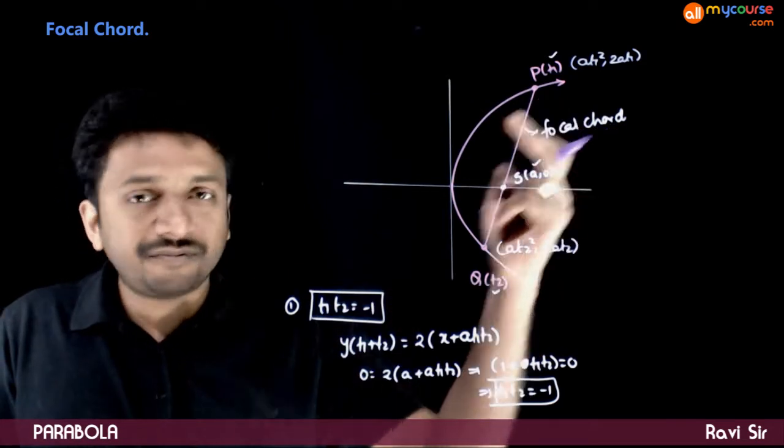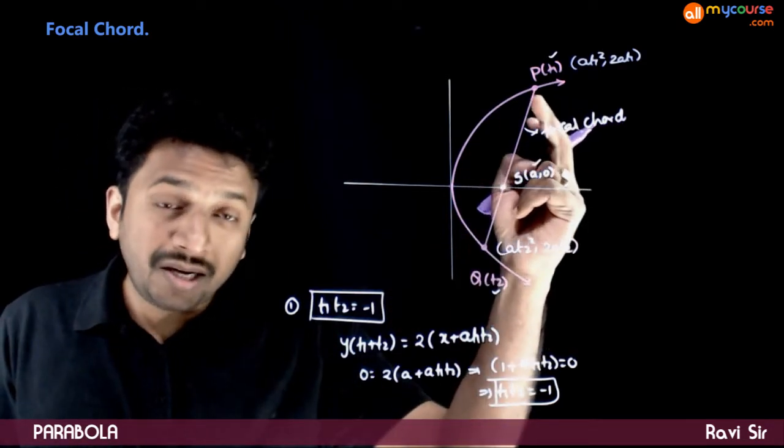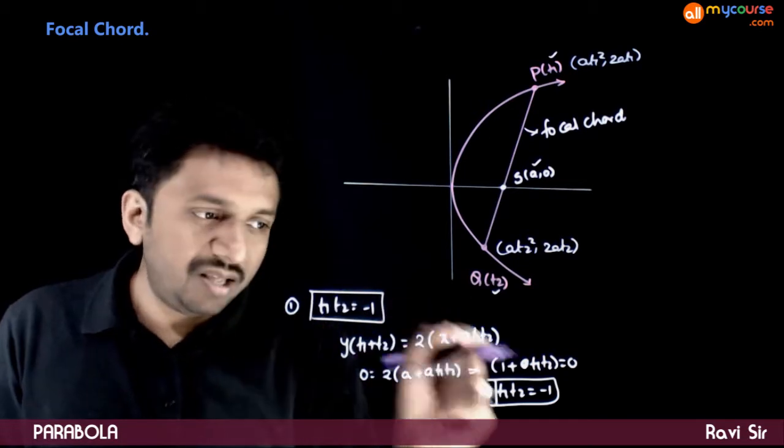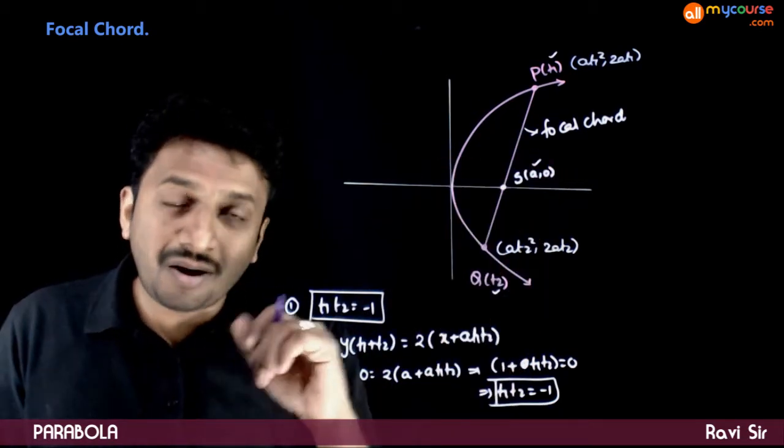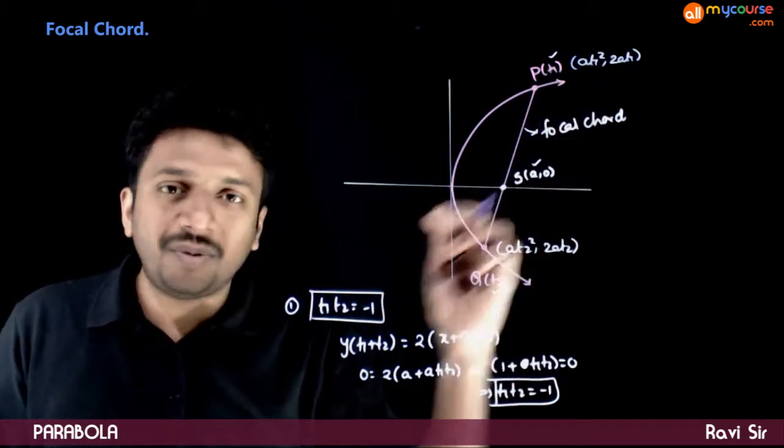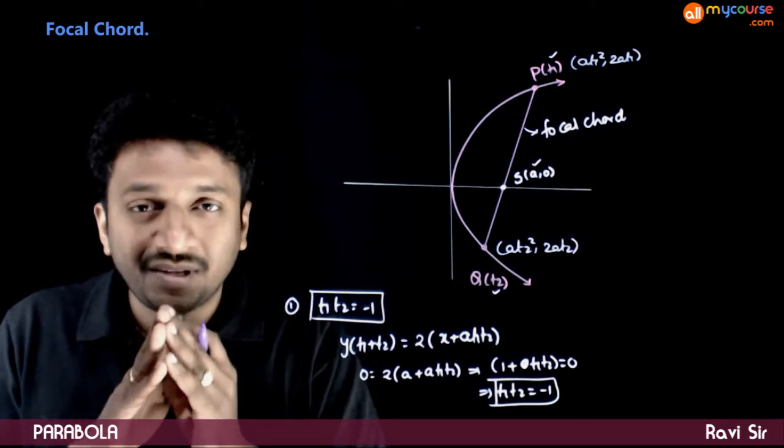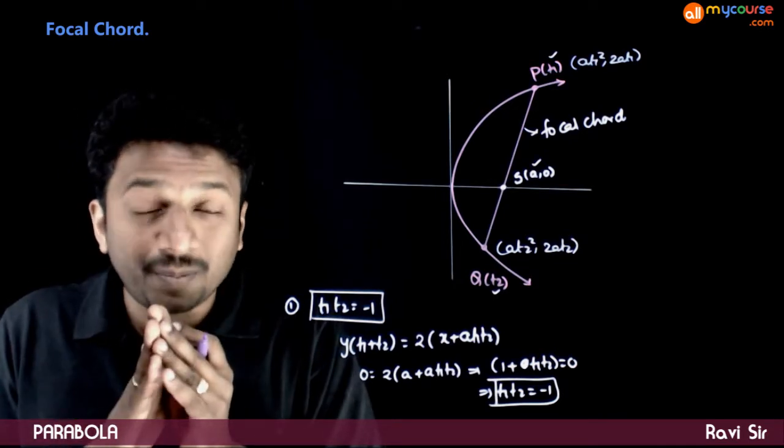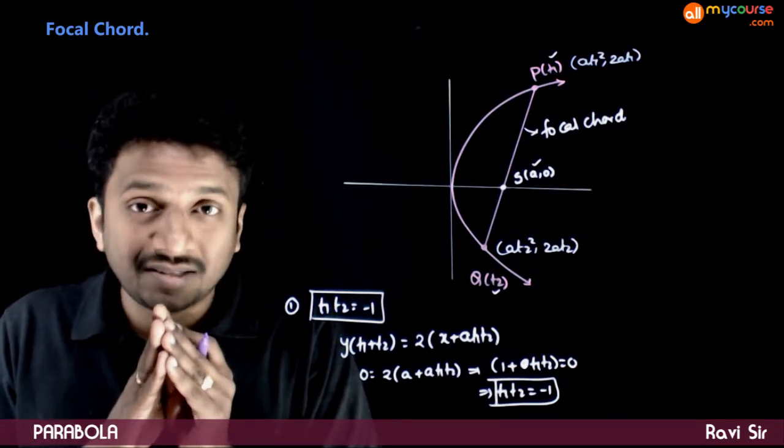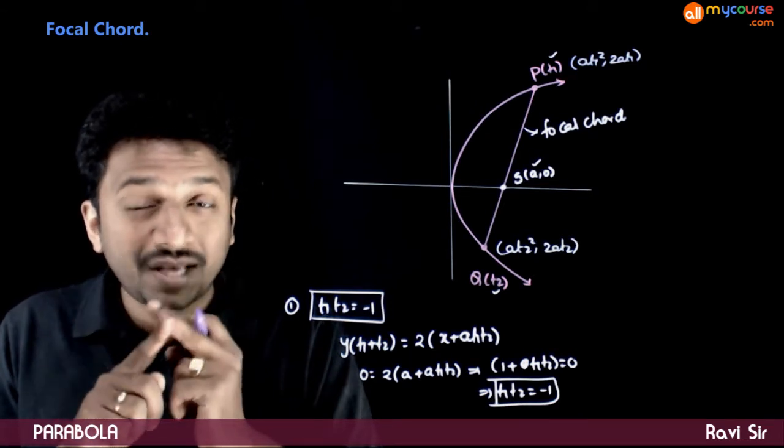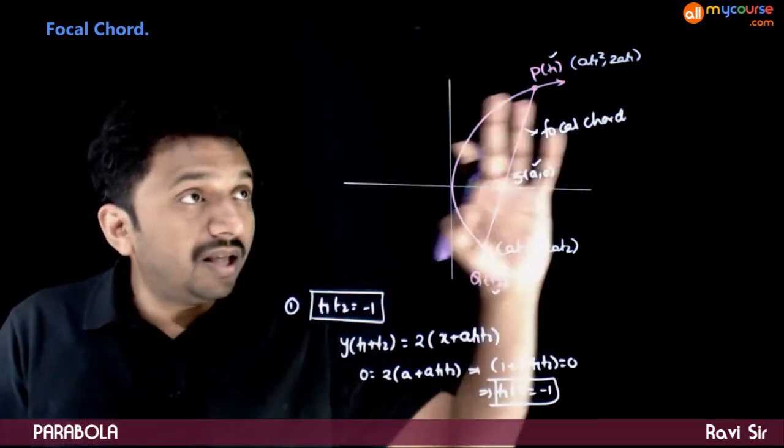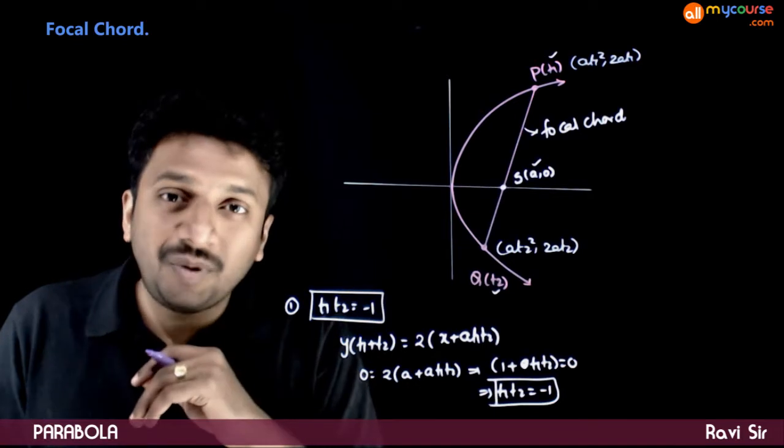That is, if a chord joining t1 and t2 has to be a focal chord, the product of these two parameters has to be equal to minus 1. Remember the condition for perpendicularity in straight lines. There the product of slopes has to be equal to minus 1. Here, the product of parameters have to be equal to minus 1.